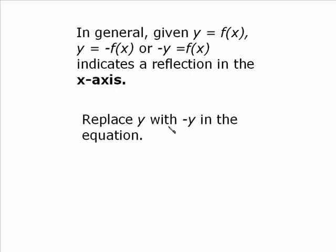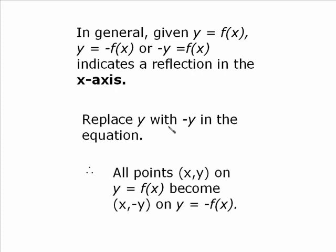Either graphically, which we just saw before, or algebraically, which we'll delve more into soon. And this statement becomes true. All points (x, y) on the original graph, y equal f(x), become (x, negative y) on y equal negative f(x). So the y points change, the x points do not change.